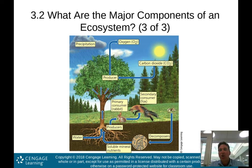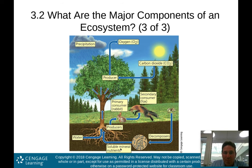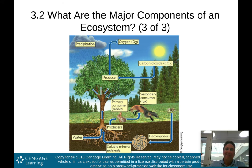Then we have secondary and tertiary consumers — like the fox, or human beings — which eat those primary consumers. Underneath the ground, we have our decomposers. Decomposers take dead organic matter — be it plants or animals — and break it down into soluble mineral nutrients that the producers can then use to create more trees, more grass. These are the major components of the ecosystem.